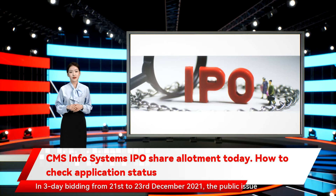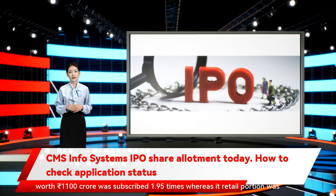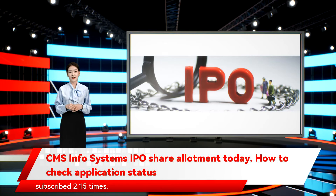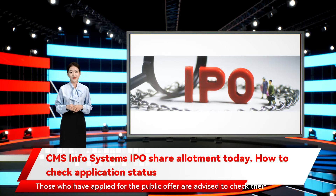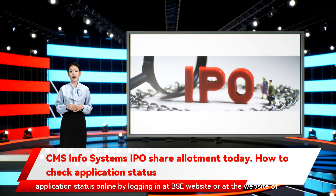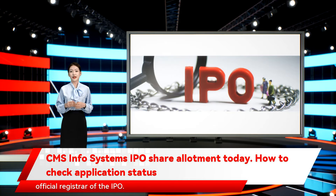In the three-day bidding period from December 21 to December 23, 2021, the public issue worth 1,100 crore Indian rupees was subscribed 1.95 times, whereas the retail portion was subscribed 2.15 times. Those who have applied for the public offer are advised to check their application status online by logging in at the BSE website or at the website of the official registrar of the IPO.